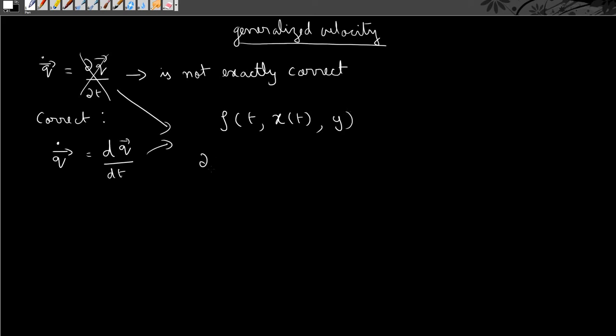Then how do we define ∂ρ/∂t? This is defined as the limit where Δt tends to 0: [ρ(t + Δt, x(t), y) - ρ(t, x(t), y)] / Δt.